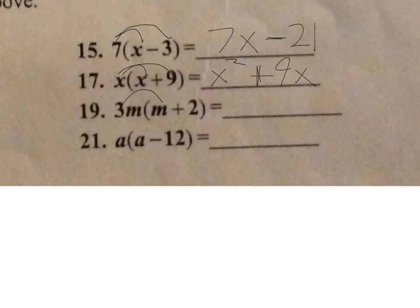3m times m. This is tricky. 3m times m. You're really saying m times m is m squared. And the 3 stays the same. 3m squared. And then 3m times plus 2 is going to stay positive. And it would be 3 times 2 is 6. And the m will just stay there. So it would be 6m. 3m squared plus 6m.